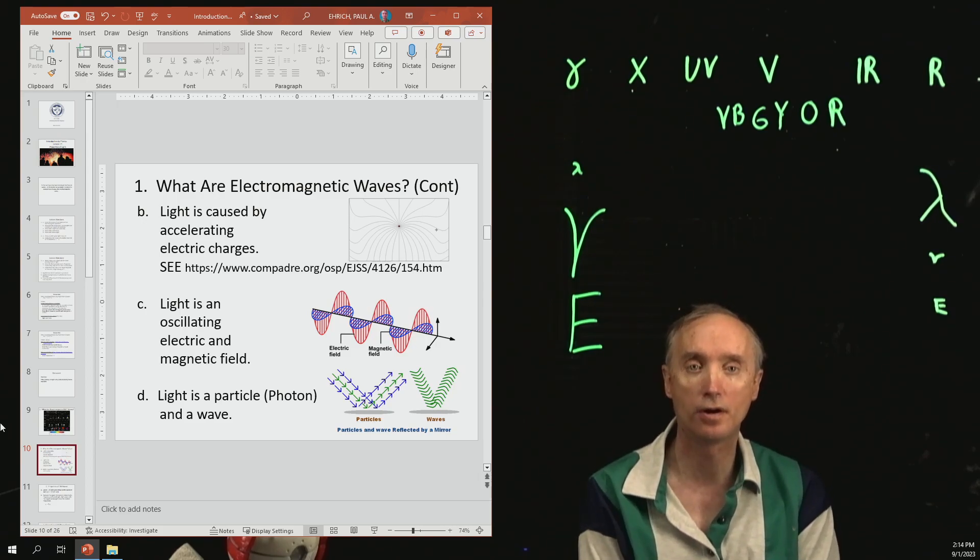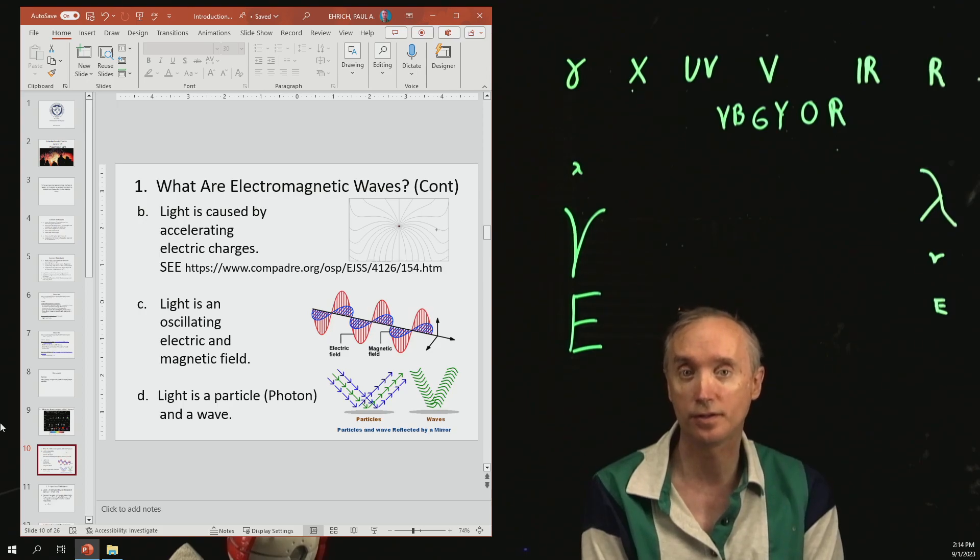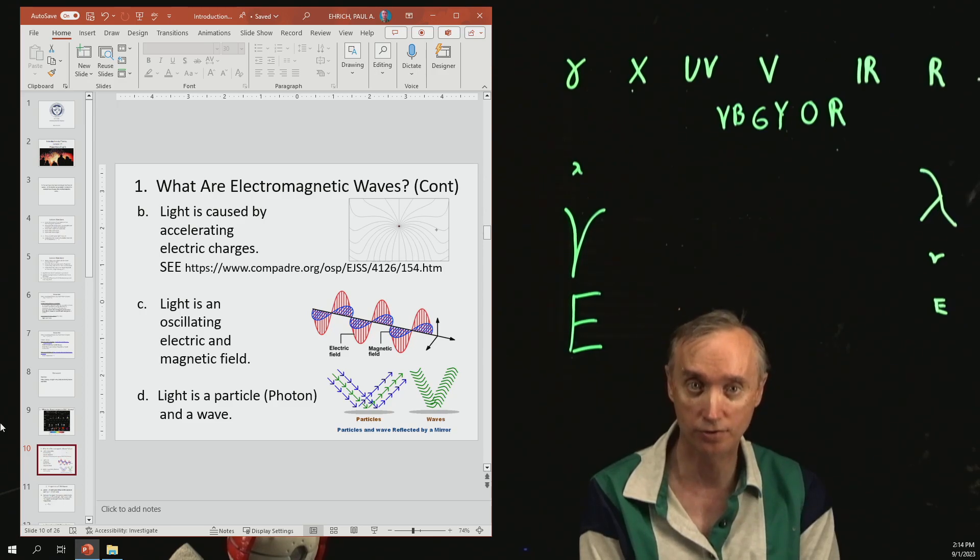Let's continue talking about what are electromagnetic waves. The next thing is that electromagnetic waves are caused by accelerating electric charges. Notice I said accelerating electric charges.